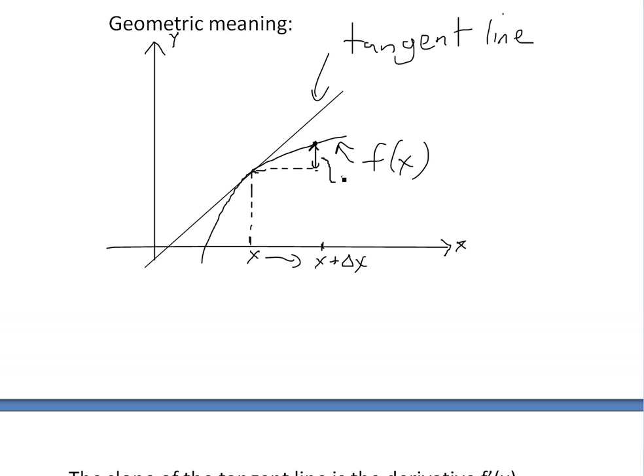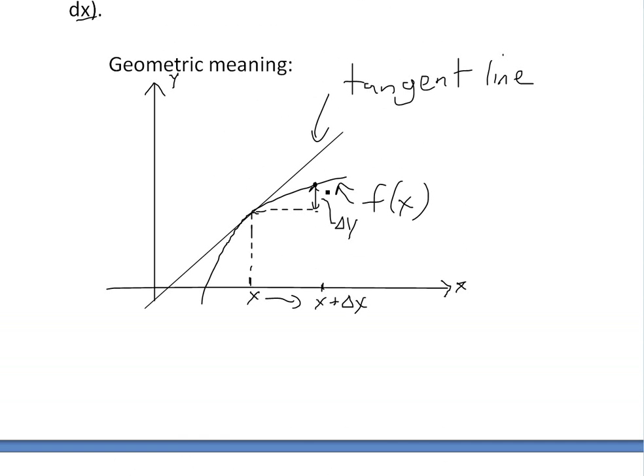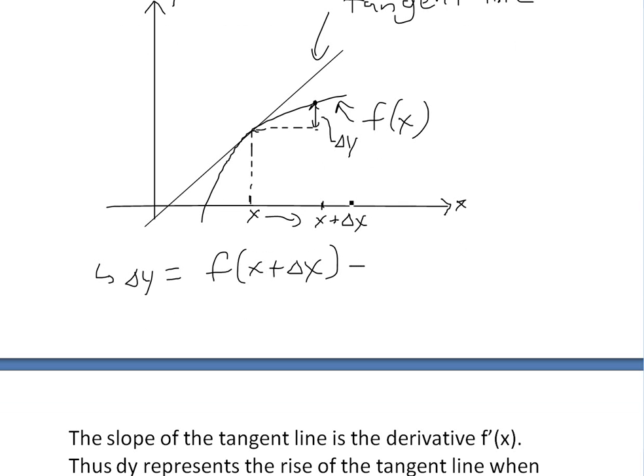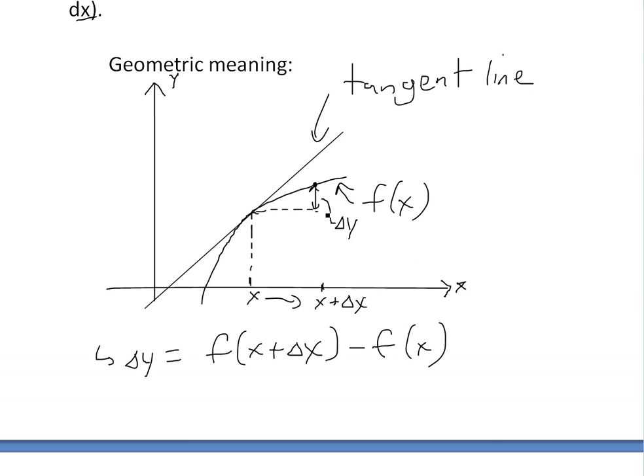In this case, this would be our delta y right here. So when we go from x to x plus delta x, we go from basically f of x to f of x plus x right here. Or in other words, you can write delta y is equal to f of x plus delta x. So it's just a difference between this top part and minusing by the starting point. And this is f of x. So that's this point right here.